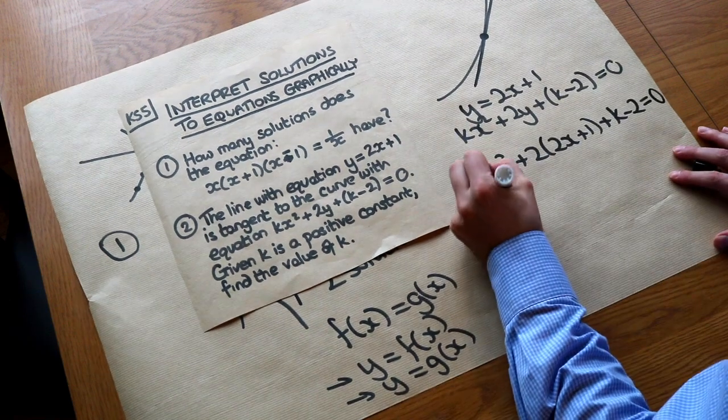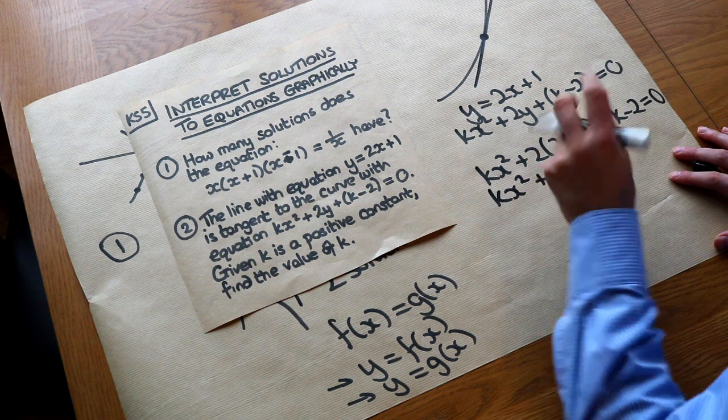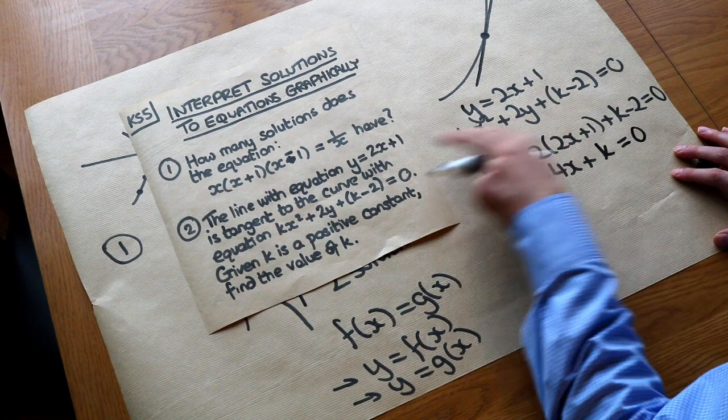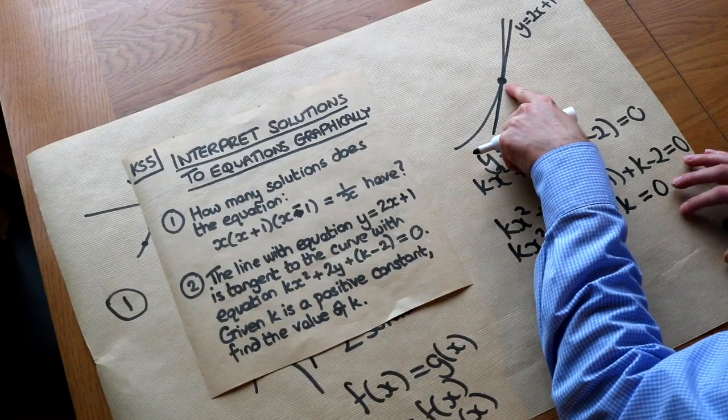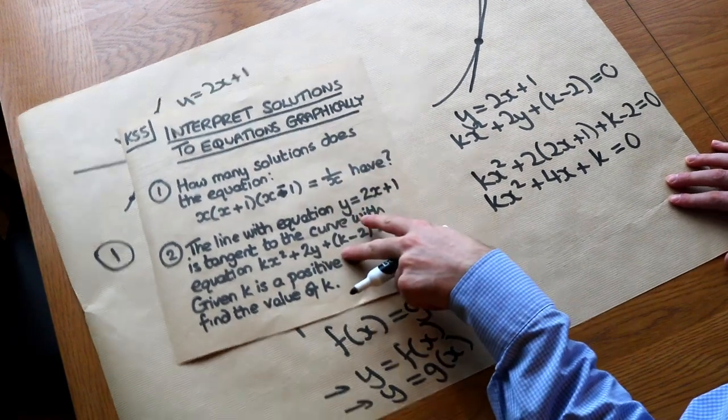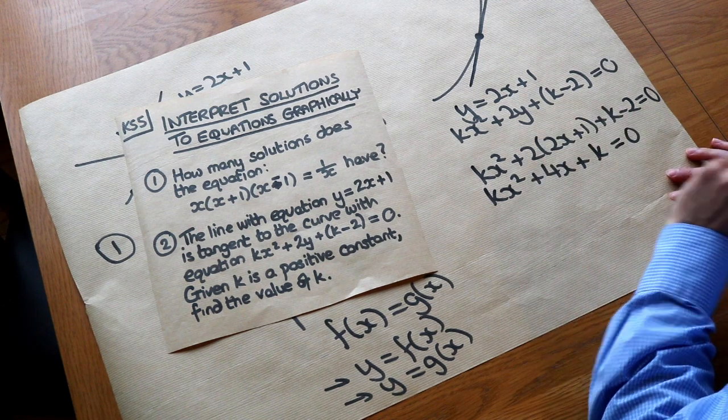And let's just expand this. We've got kx squared plus 4x plus the 2, but minus that 2, which cancels, plus the k equals 0. And if we have one point of intersection, then this equation must have one solution. And we can use the discriminant to say when the quadratic has exactly one solution, or equal roots, as we say.